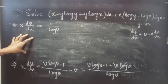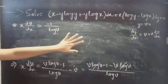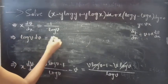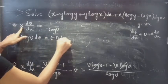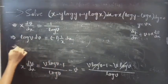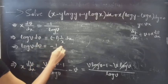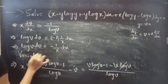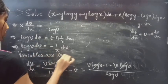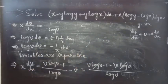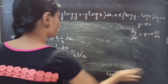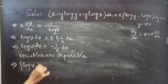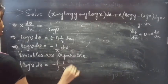Now we will write functions of v and differential dv on one side, and functions of x and dx on the other side. You can write this as log v dv equals minus 1 by x into dx. The variables are separable. Now we can perform integration on both sides: integral of log v dv equals minus integral of 1 by x dx.